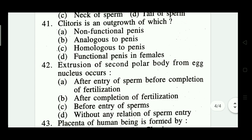Question number forty-one: clitoris is an outgrowth of which? Options: non-functional penis, analogous to penis, homologous to penis, and functional penis in female. The right answer is homologous to penis — option C.